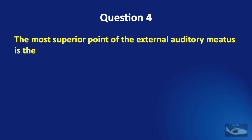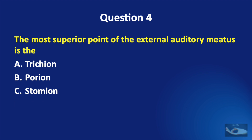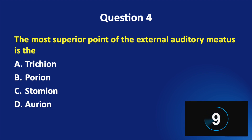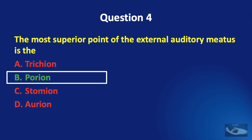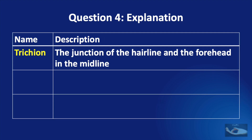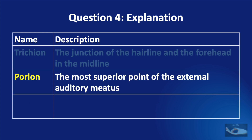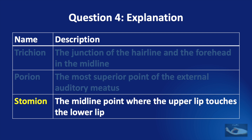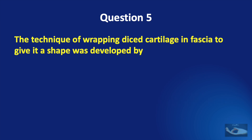Question number 4. The most superior point of the external auditory meatus is the: tracheon, porion, stomion, or orion. The tracheon is the junction of the hairline and the forehead in the midline. The porion is the most superior point of the external auditory meatus. The stomion is the midline point where the upper lip touches the lower lip.